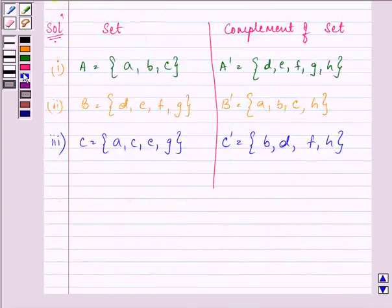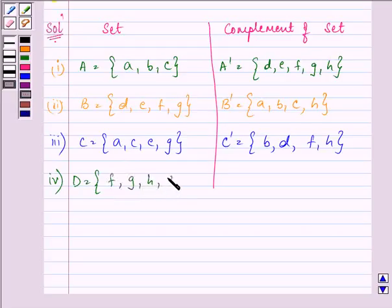Proceeding on with the last and final part, the elements of set D are given to us as F, G, H, A.